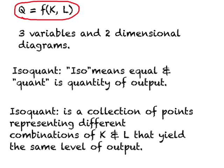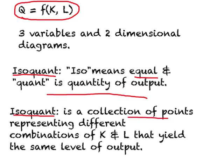What we'll do is look at different combinations of capital and labor which produce the same level of output. So what we need is a concept called isoquant. Isoquant can be broken down into two parts: ISO means equal, and quant is a short form for quantity of output. So we are looking at equal or fixed quantity of output. An isoquant is a collection of points representing different combinations of capital and labor that produce the same level of output.